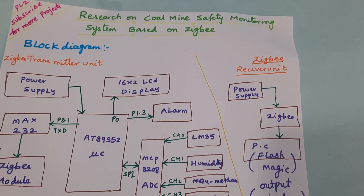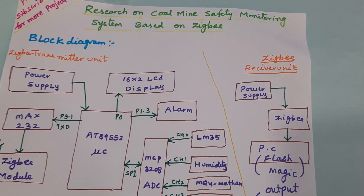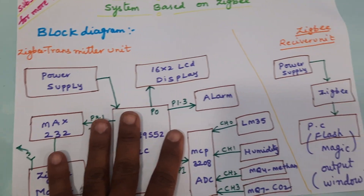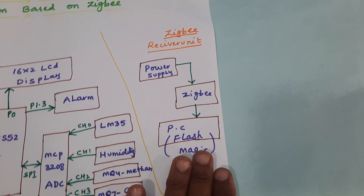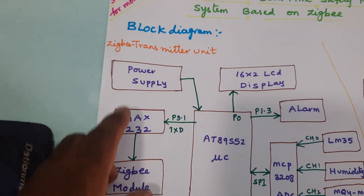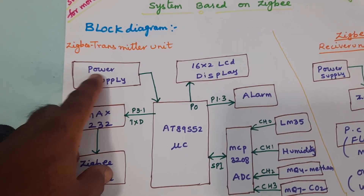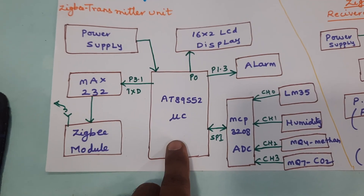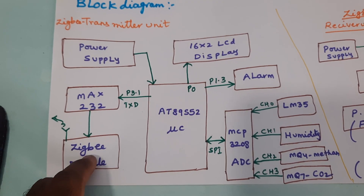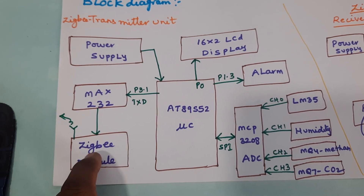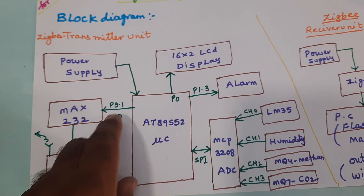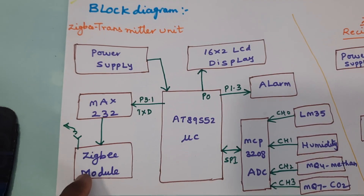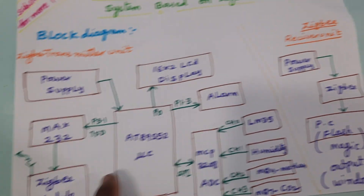The project title is Coal Mine Safety Monitoring System using ZigBee. In this project we are using one transmitter mode and one receiver mode. In the transmitter mode we are using a 5V power supply module, an 89S52 microcontroller IC, MAX232, and a ZigBee module. It is connected with port P3.1 transmitter, and it will send data from the transmitter to the receiver module.